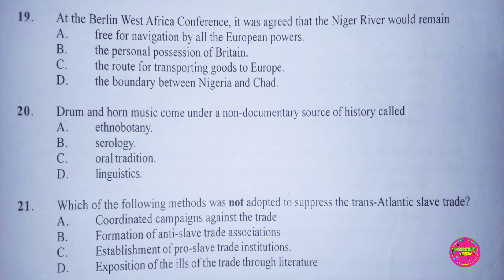Question 20. Drum and horn music come under a non-documentary source of history called: A. Ethnobotany, B. Serology, C. Oral tradition, D. Linguistics. The correct answer to this question is C. Oral tradition.